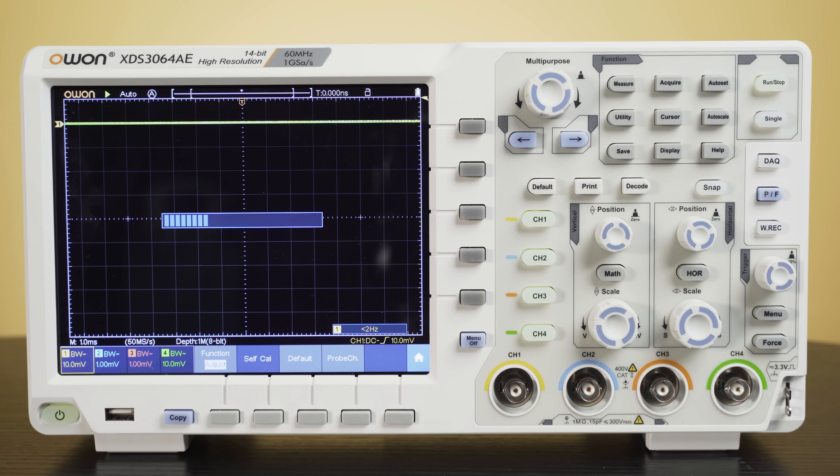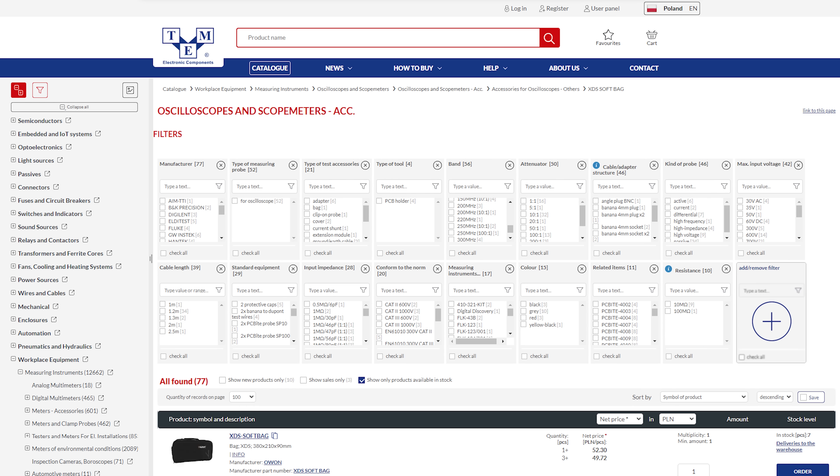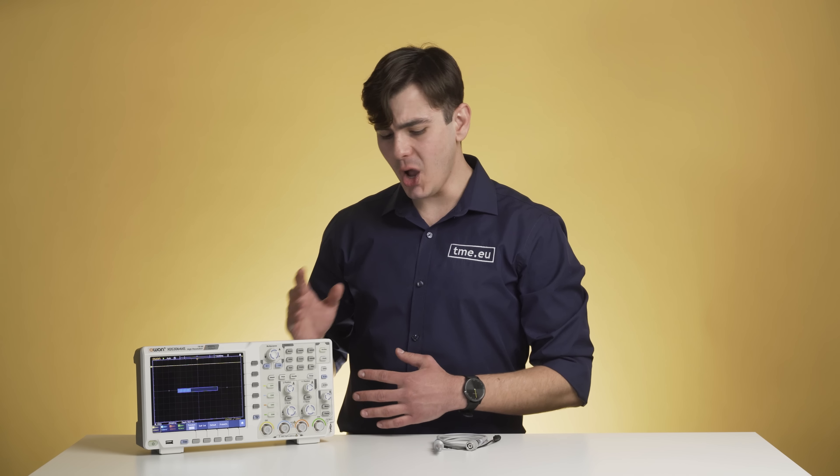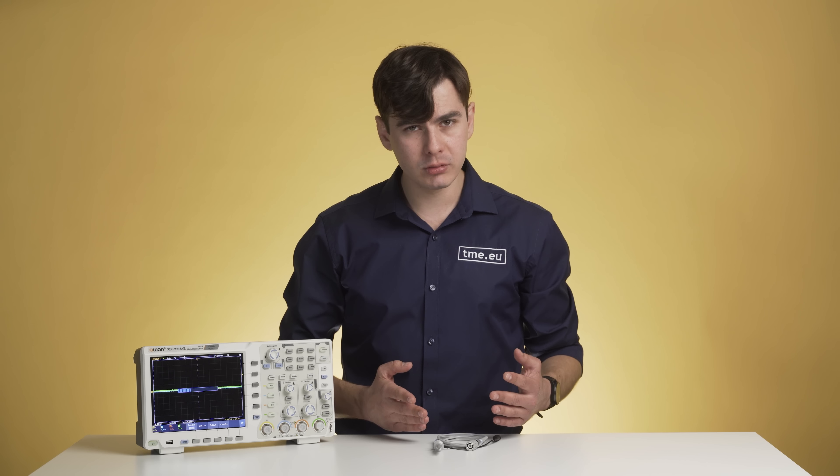The calibration process can take some time, but meanwhile you can check TMEU for oscilloscope accessories like current probes, active probes, or attenuators. Calibrating the scope without compensating the probe is like watching The Witcher in 240p on your 65 inch OLED TV. A waste of potential.